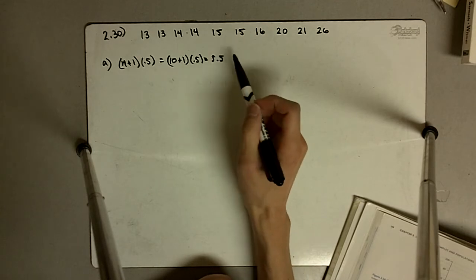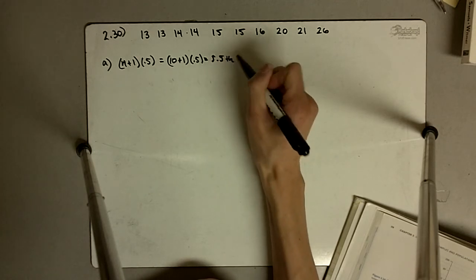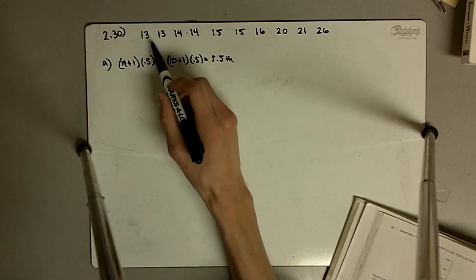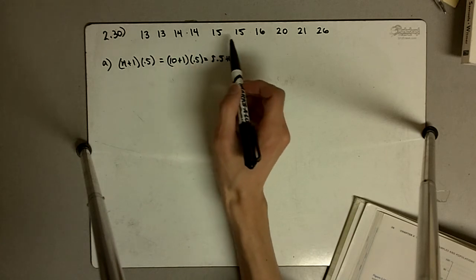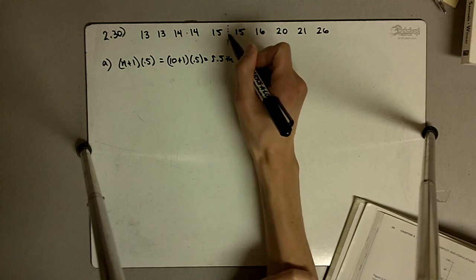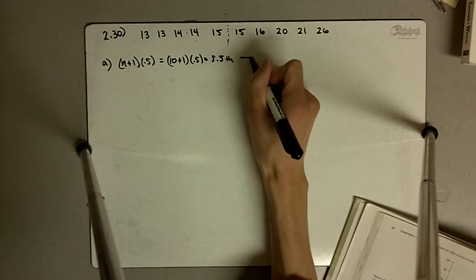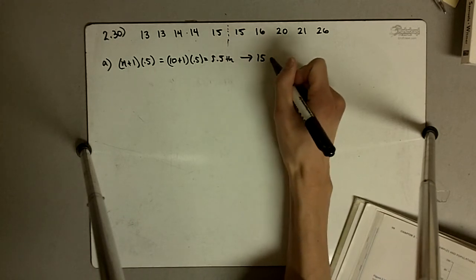We found the 5 and a half number, which corresponds to 1, 2, 3, 4, 5, the number between the fifth and sixth number and in this case that equals 15. That was the median.